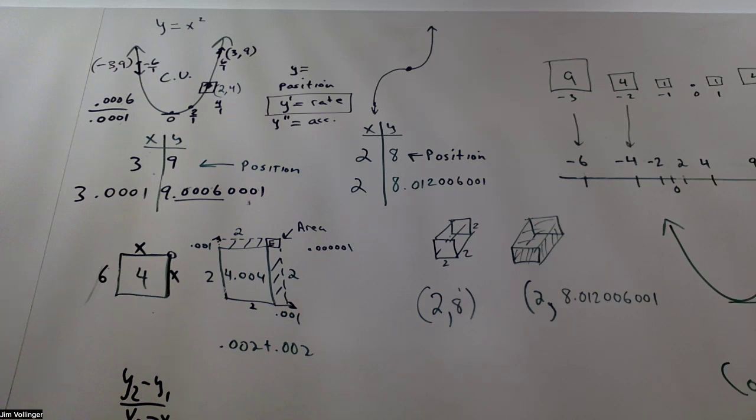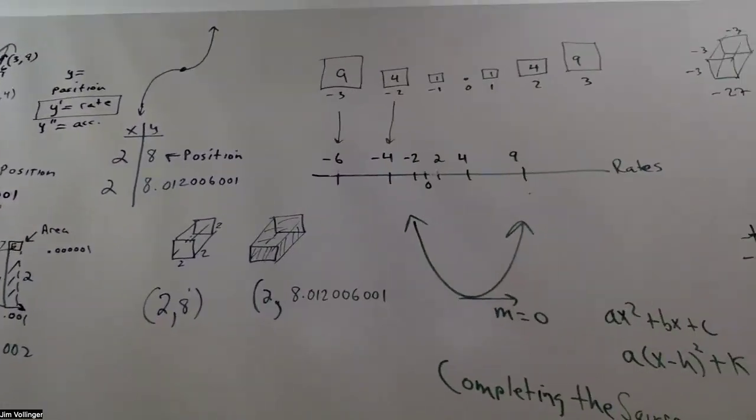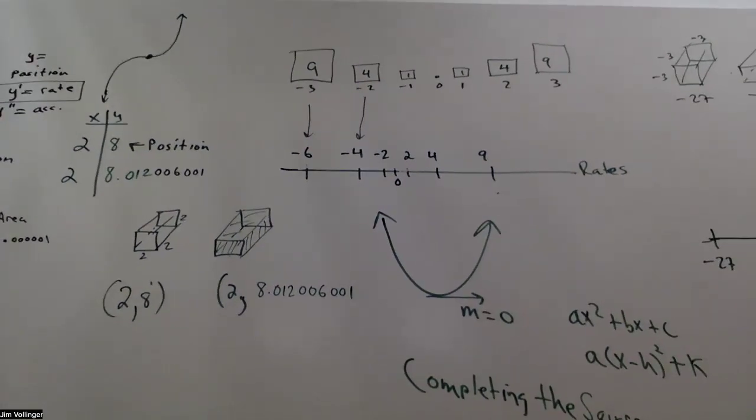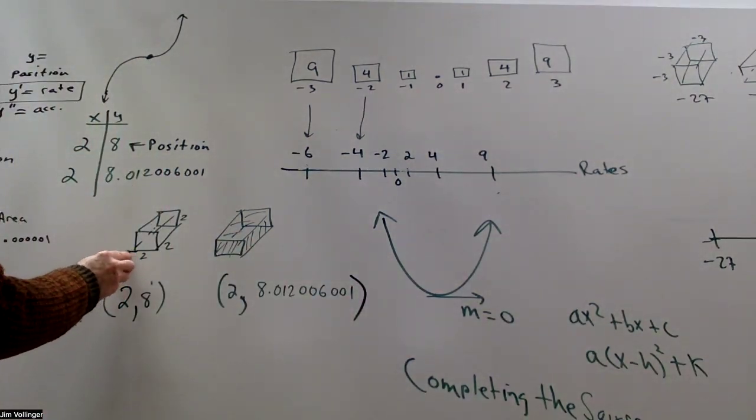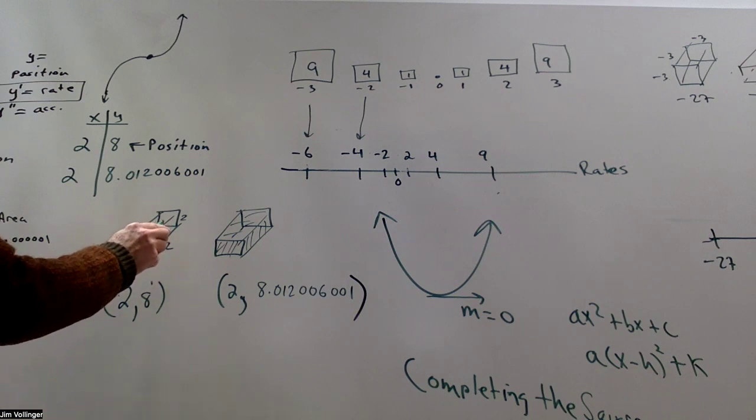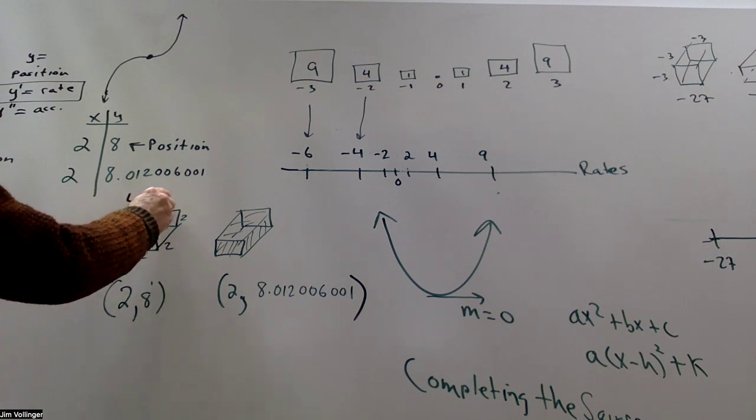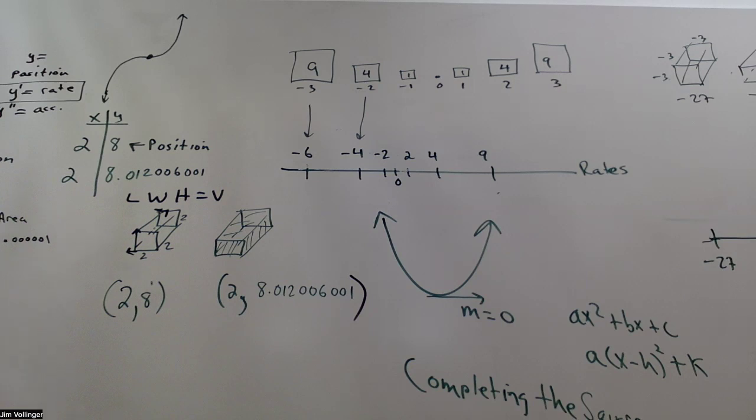But let's actually turn our attention to the cubic. And let's look at the geometry of a cubic, which is harder to draw. But if you would go and make that dimension a little bigger and that one a little bit bigger and that one a little bit bigger, length, width, height equals volume. Each may go up by 0.001.